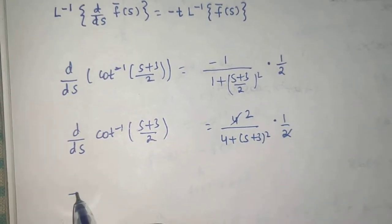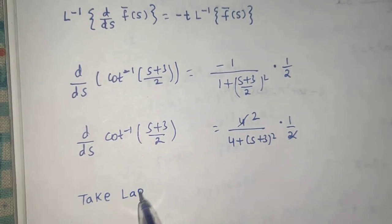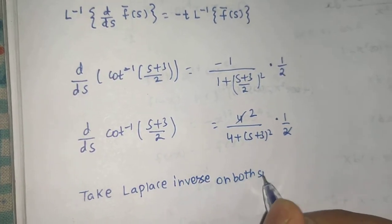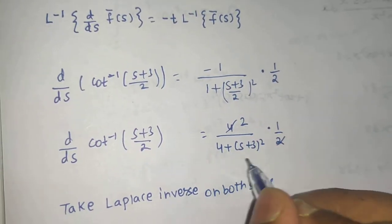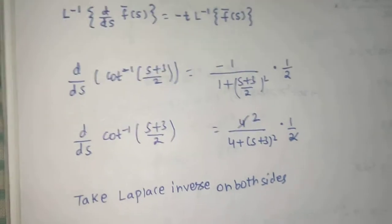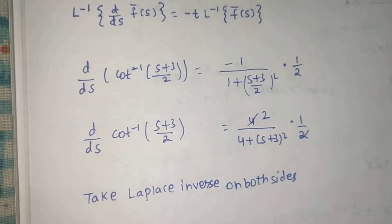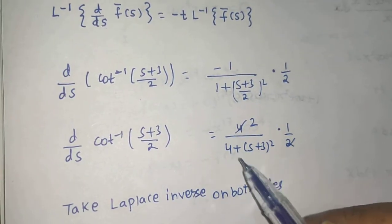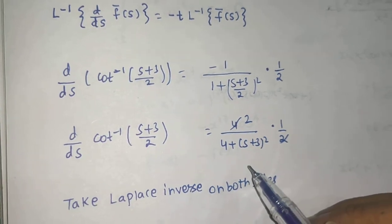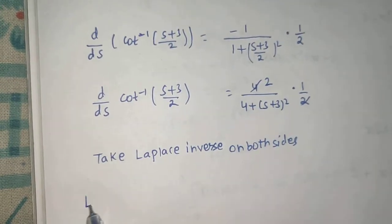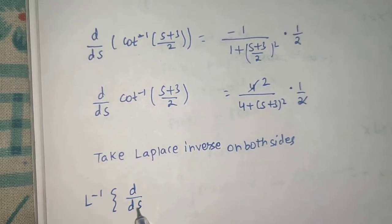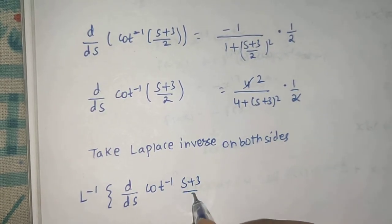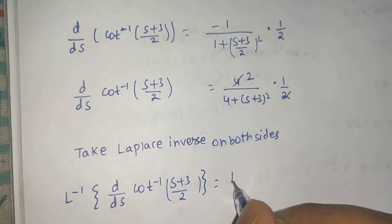Now we're ready to take the Laplace inverse on both sides, because the RHS is nearly in standard form. Using the first shift will make it formula-based. So we write L^(-1){d/dS(cot^(-1)((S+3)/2))} = 2L^(-1){1/((S+3)^2 + 4)}.